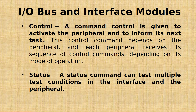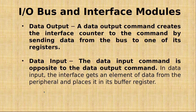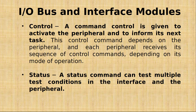The status command is used to test multiple conditions in the interface and the peripheral. The data output command causes the interface to respond by sending data from the bus to one of its registers. The data input command is the opposite of the data output command.